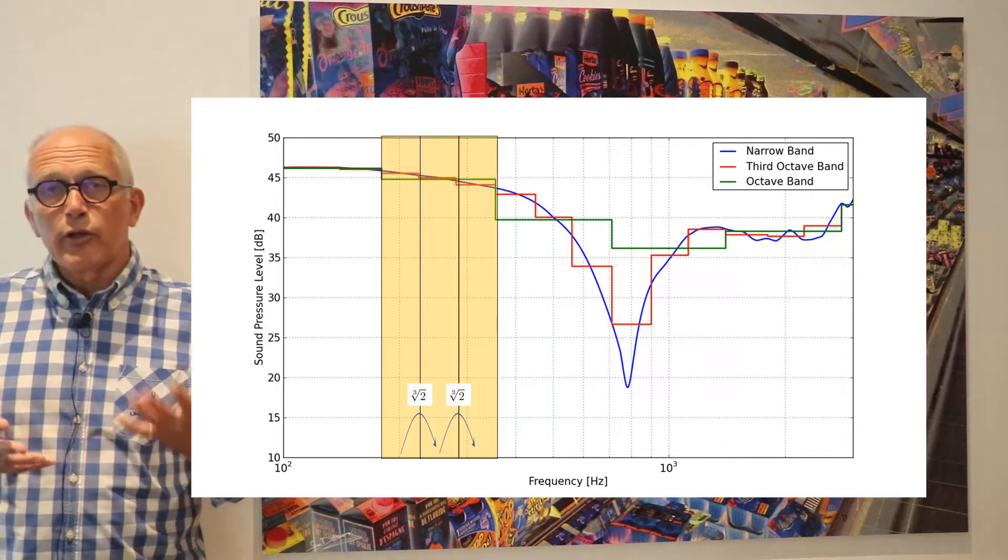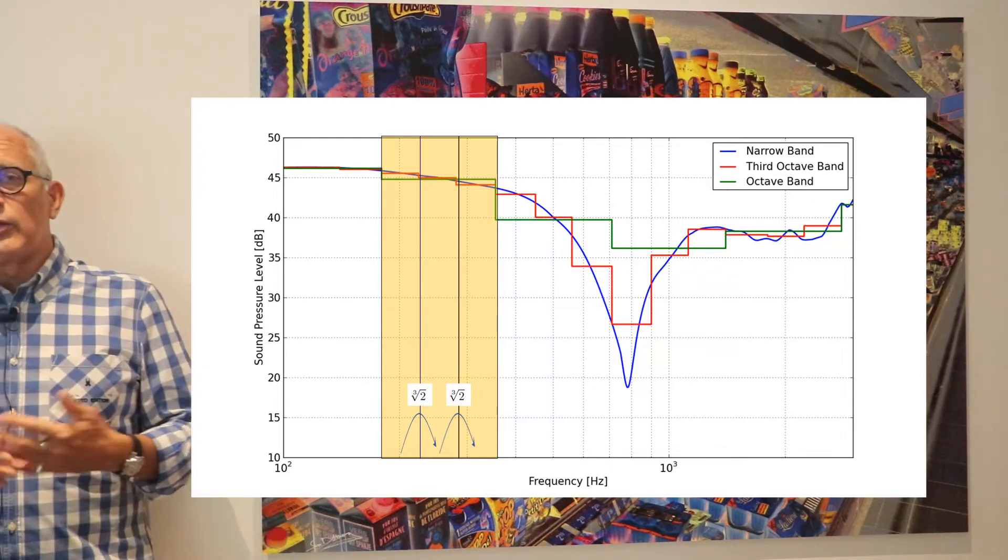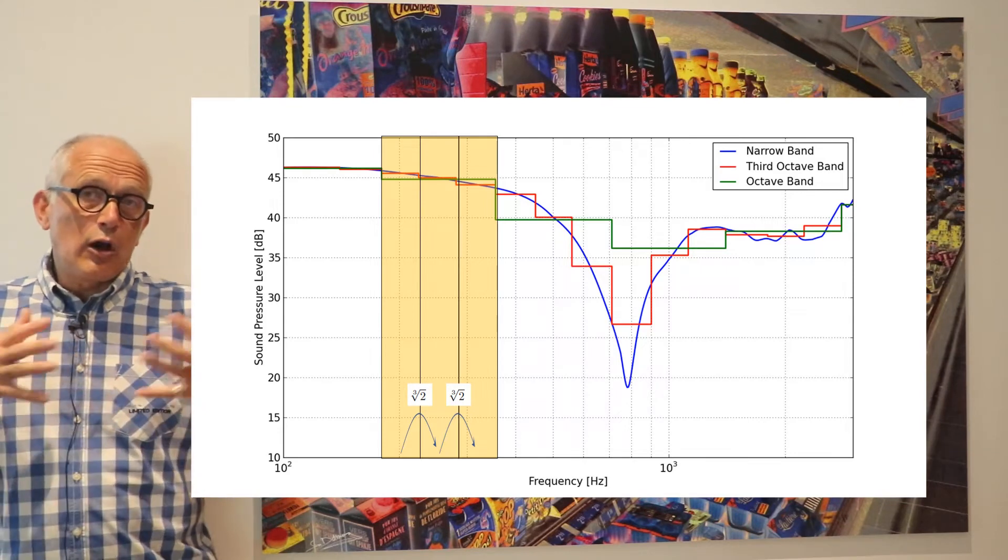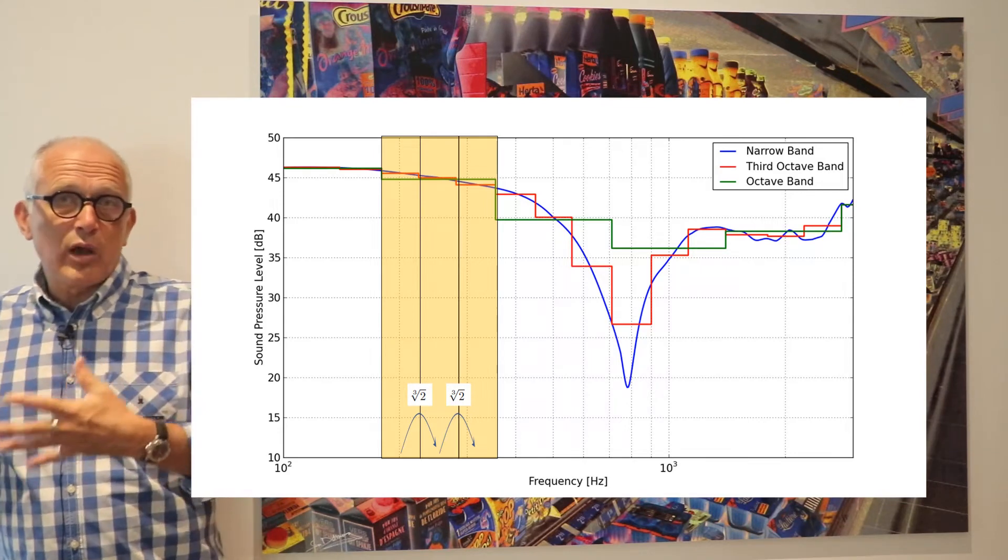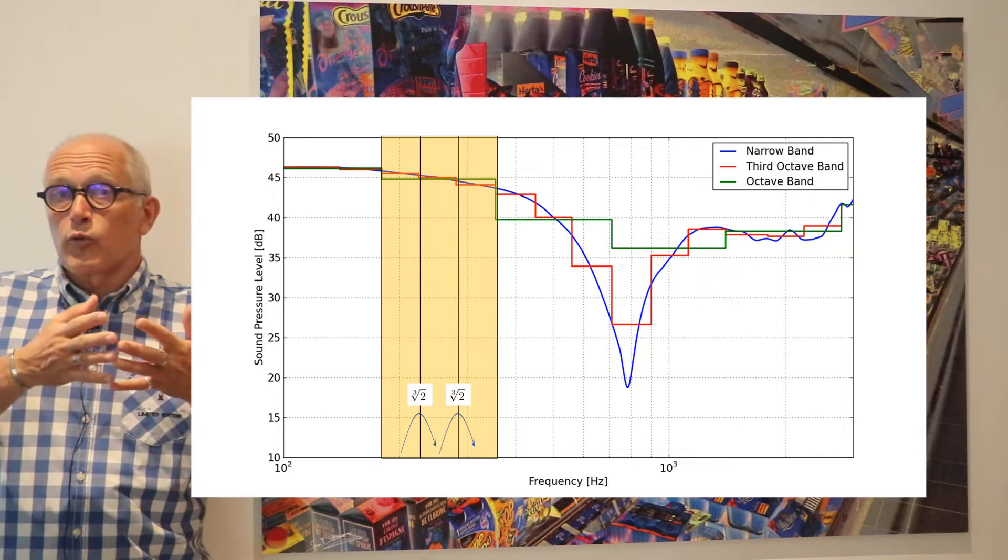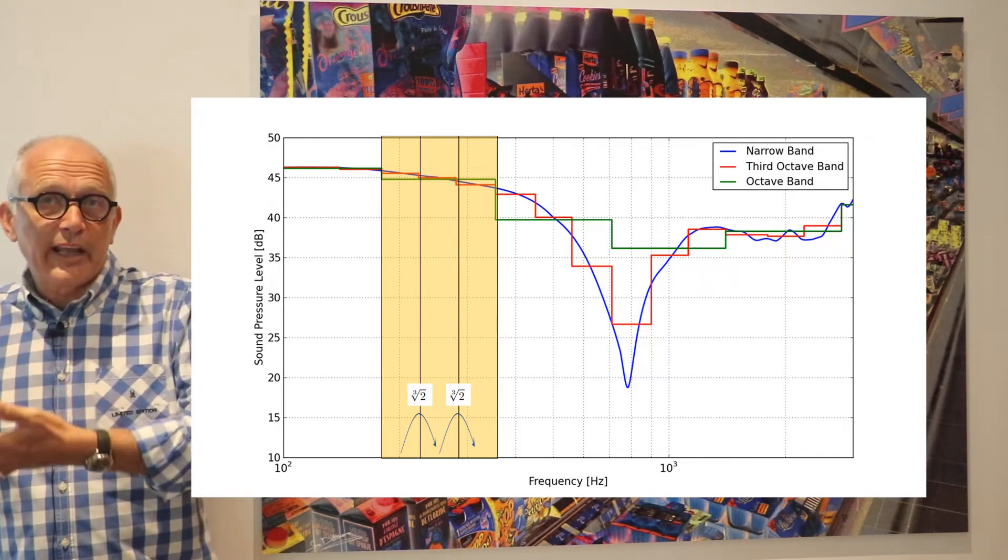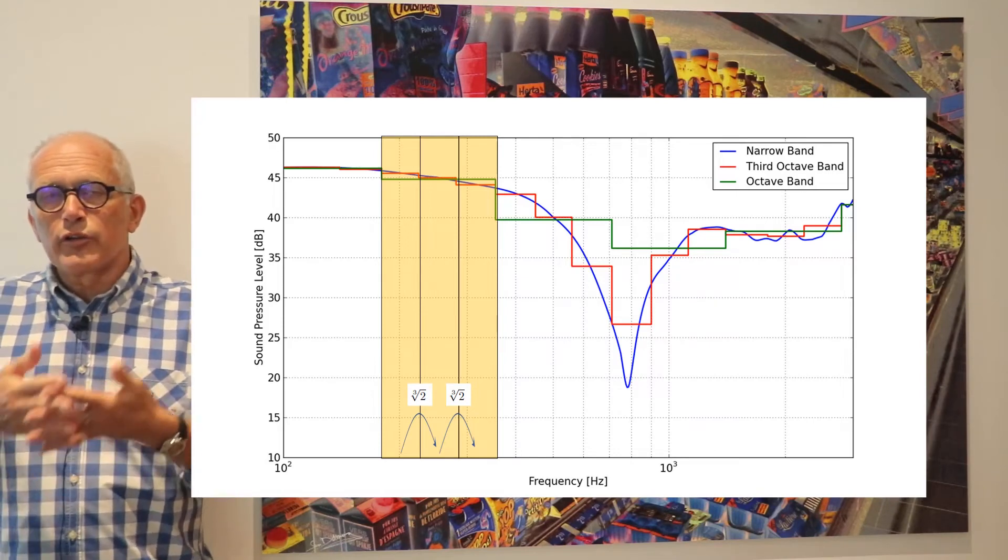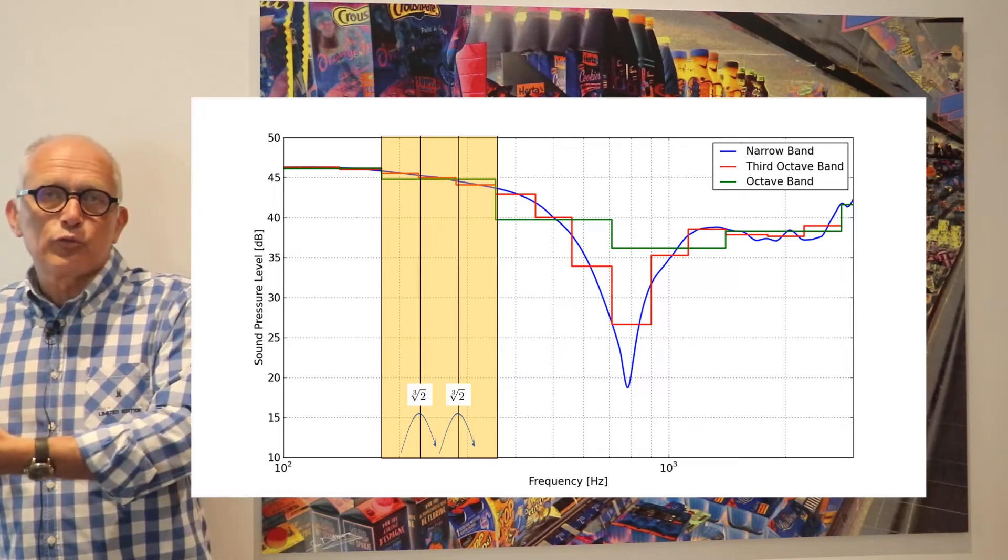So you can have smaller bands and we defined third octave bands. There are three octave bands within one octave band and so to go from one center frequency to the next, you need a geometrical progression and so the factor is the cubic root of 2.